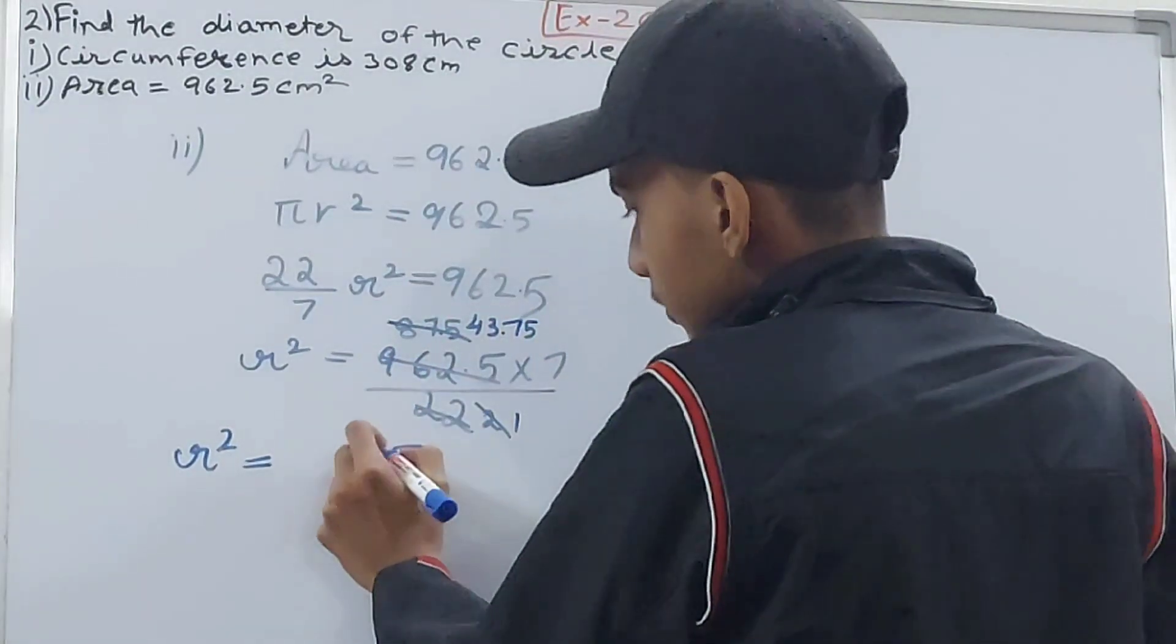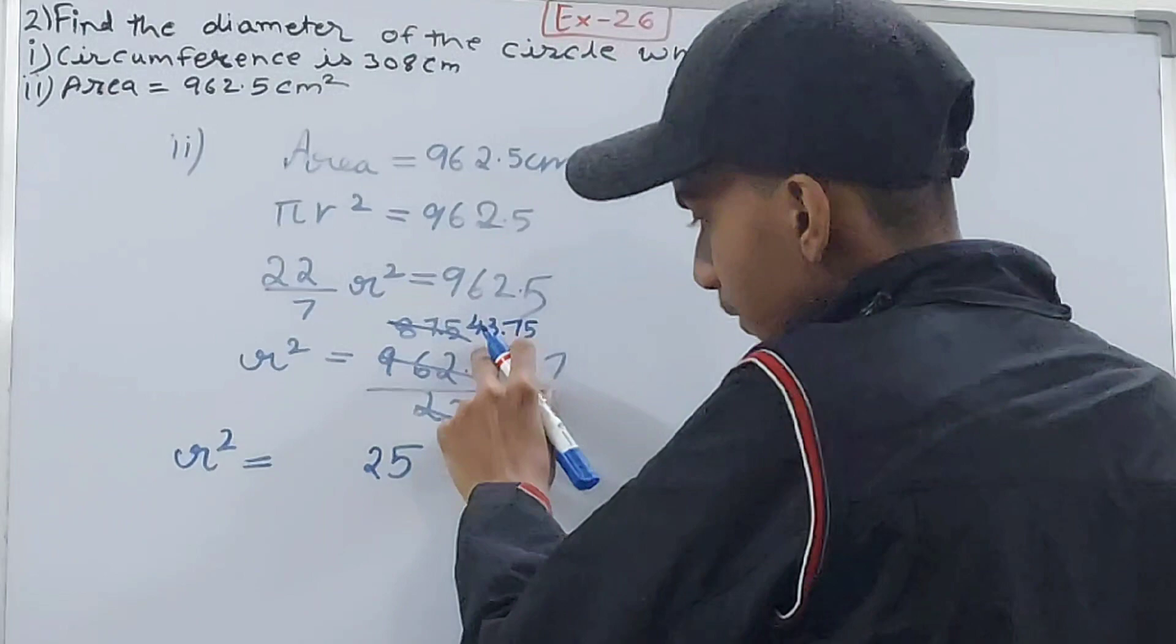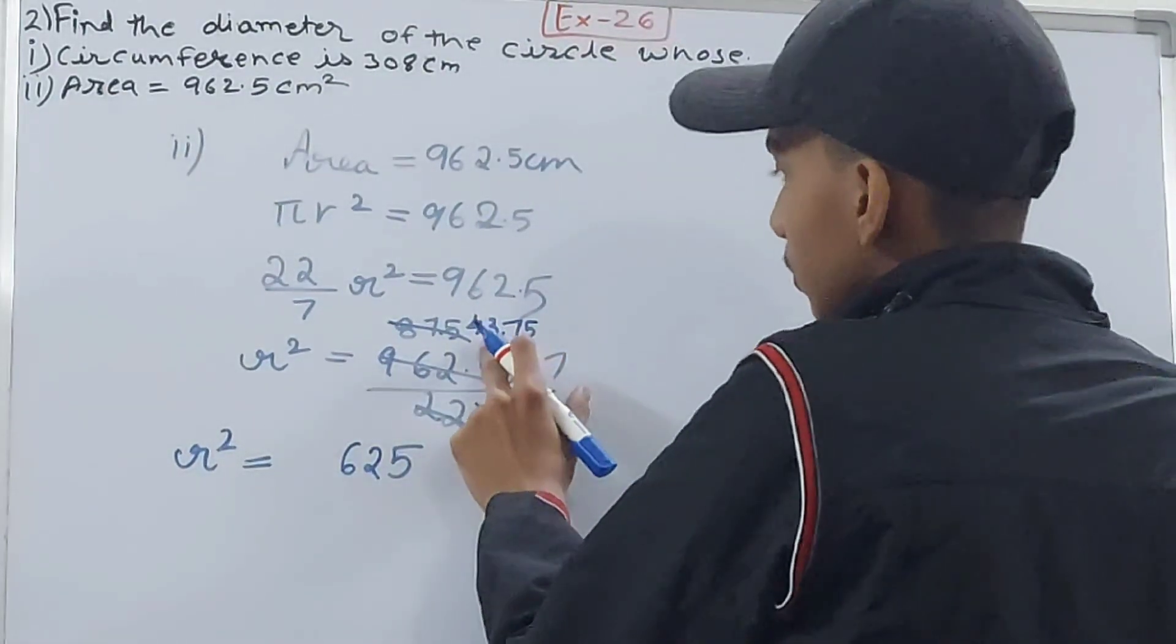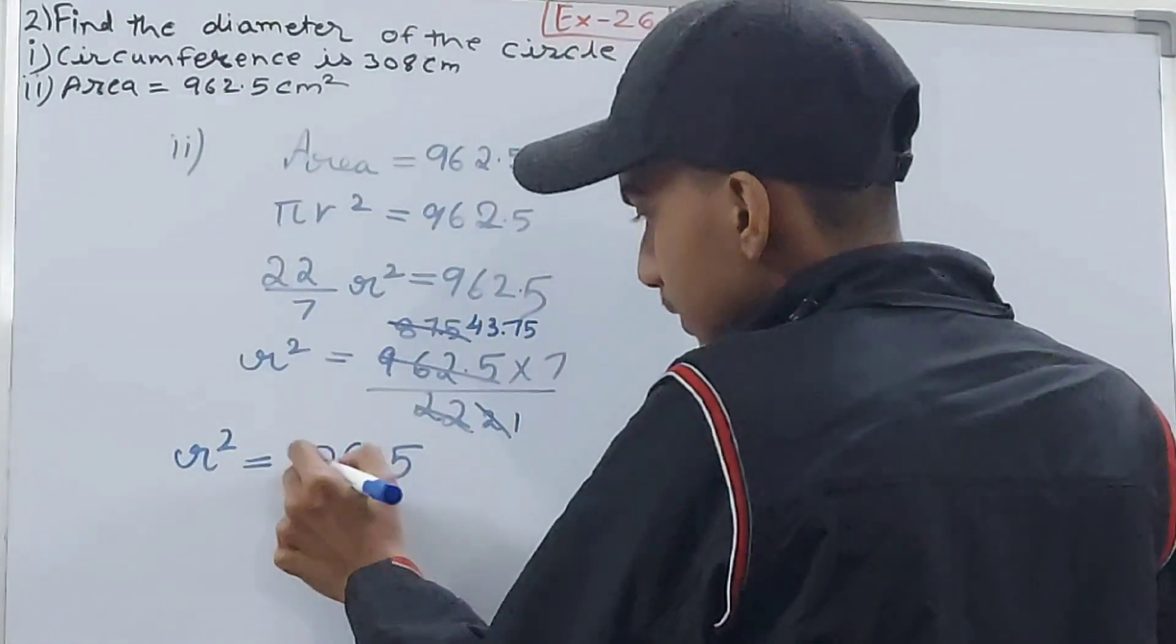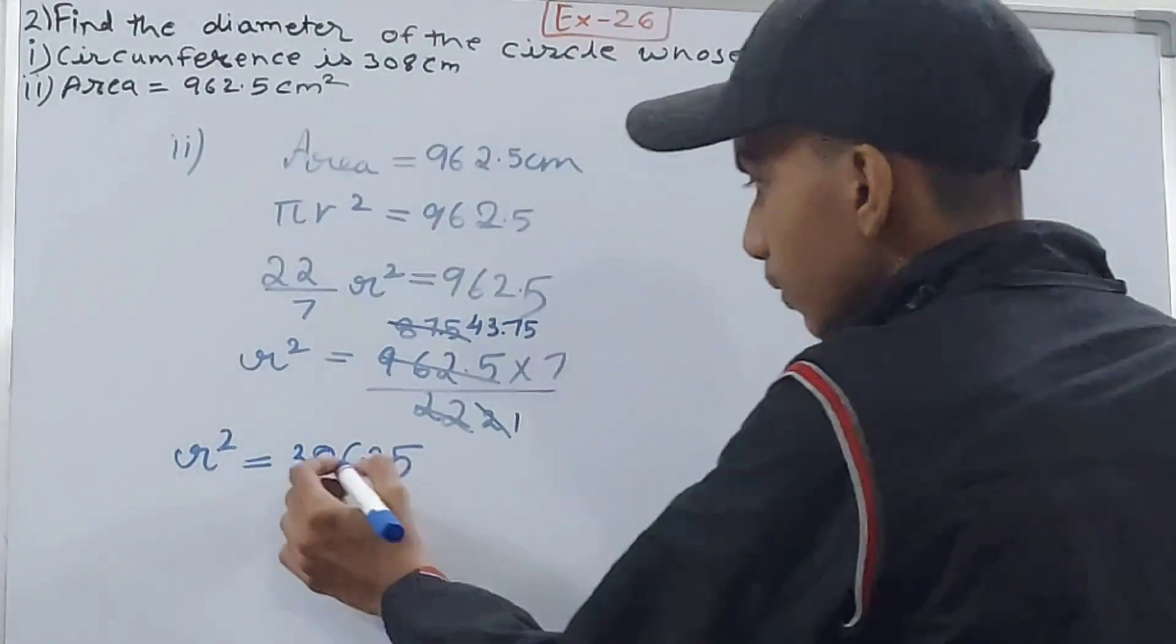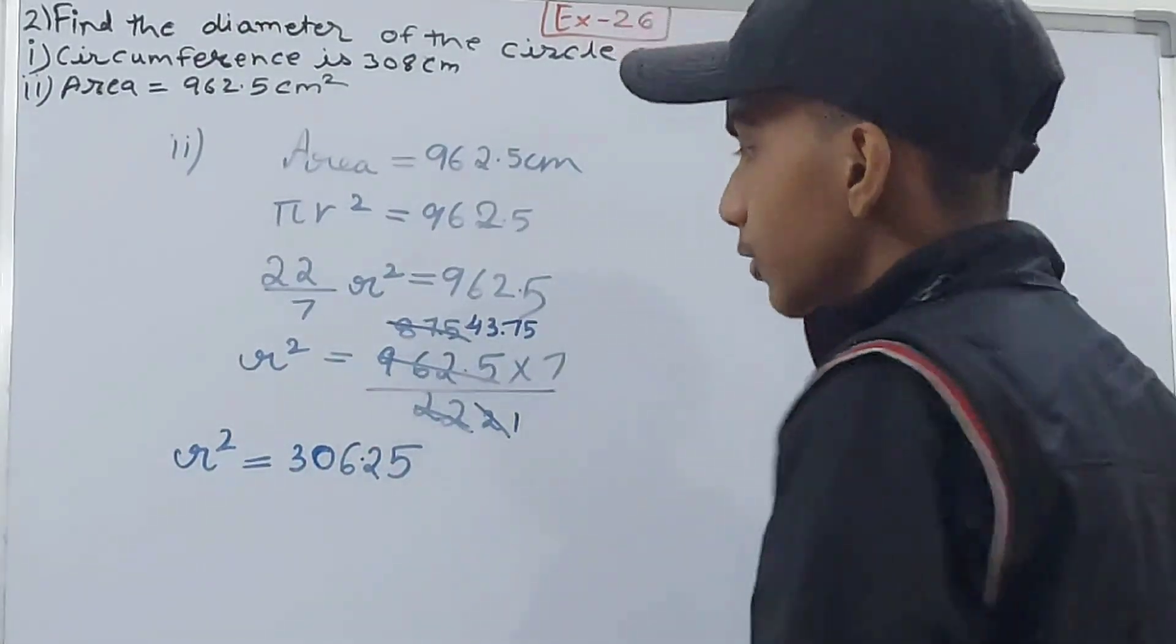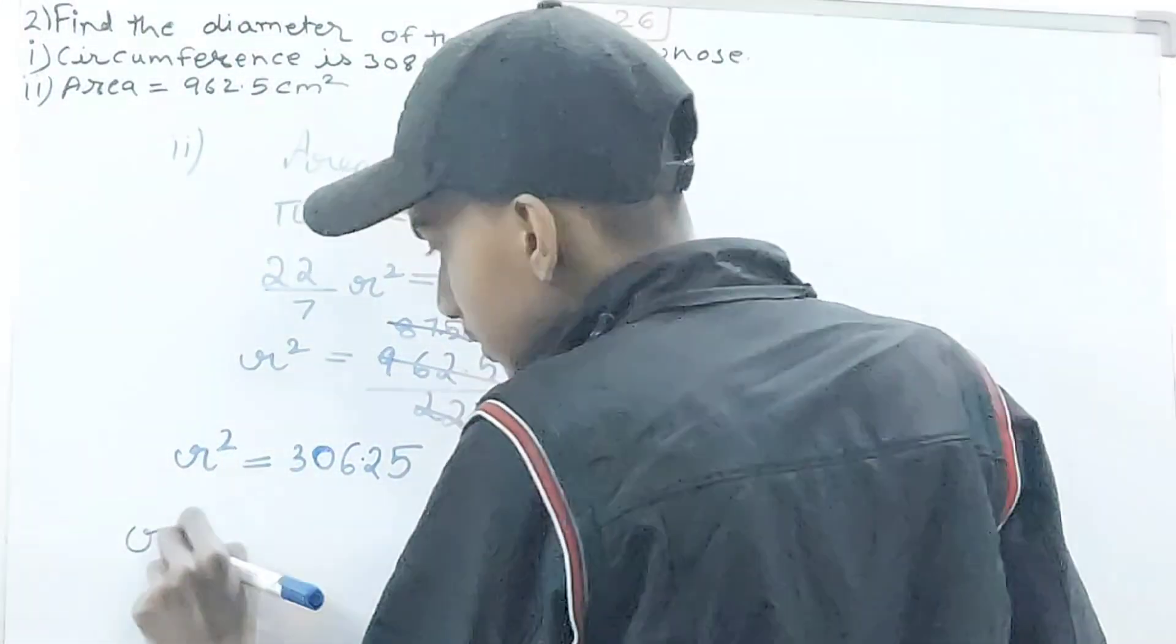So 28 and 2, that is 306.25. That's the value of r², 306.25. So r, that's the radius, will be equal to the root of 306.25. Now let's calculate that.